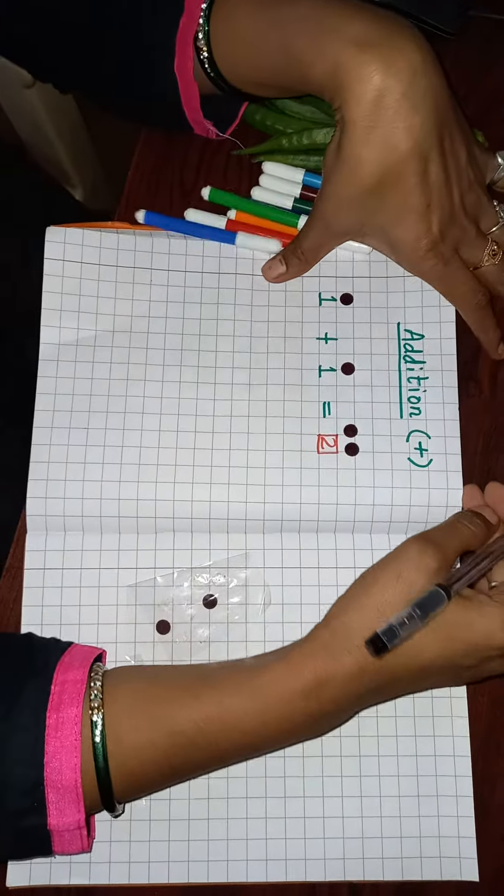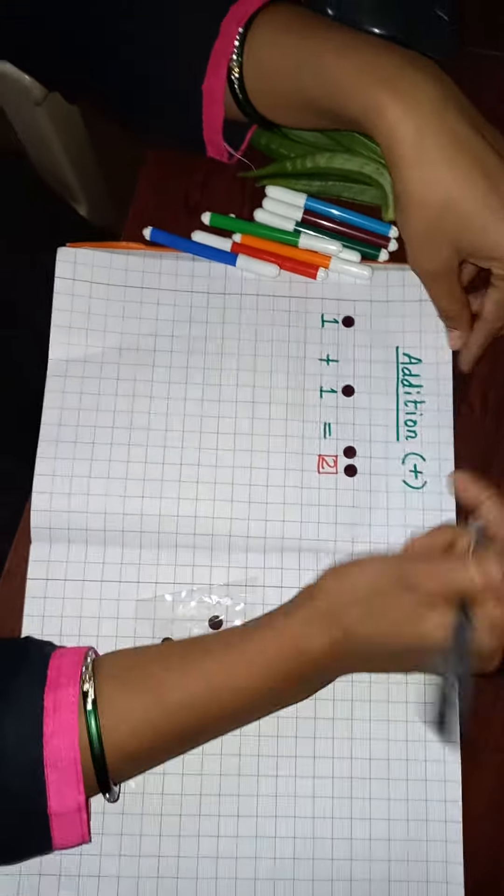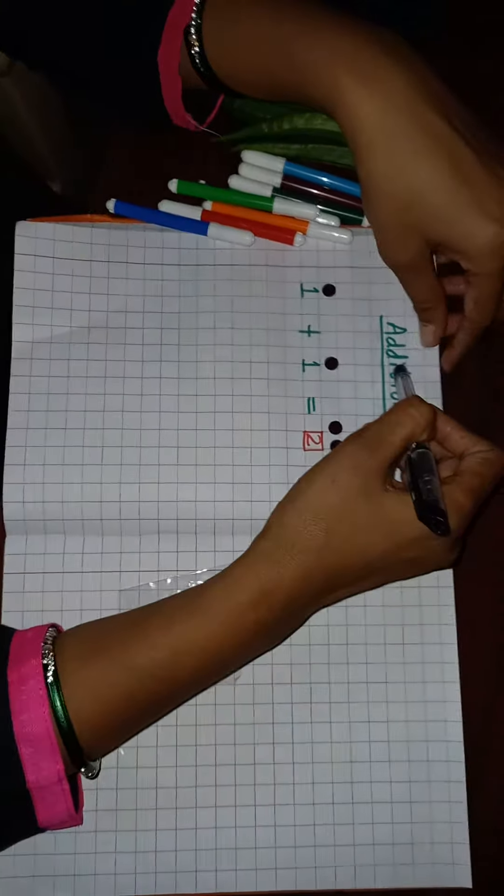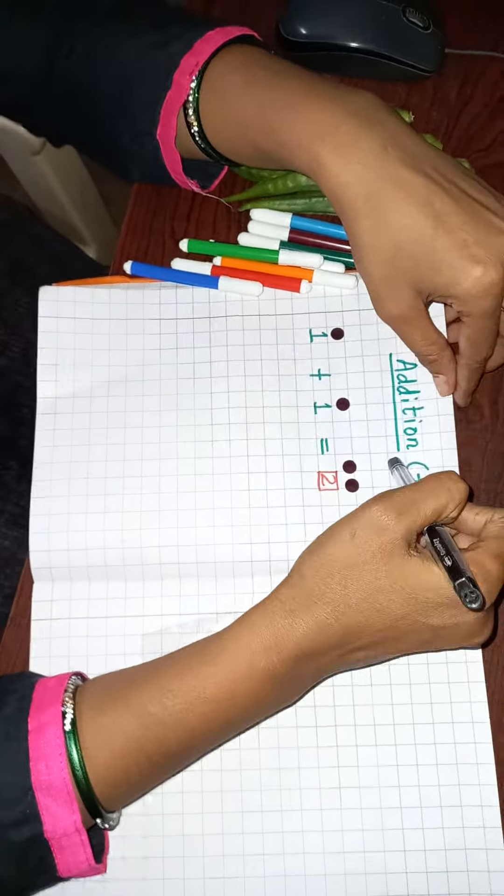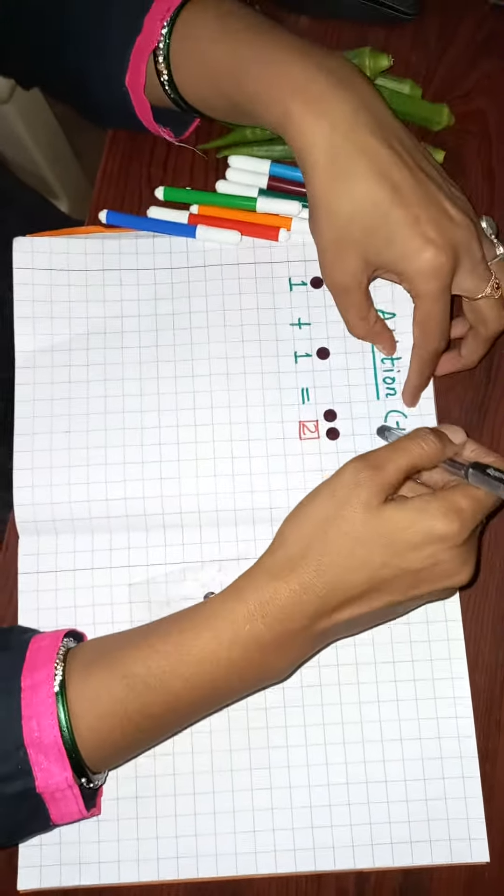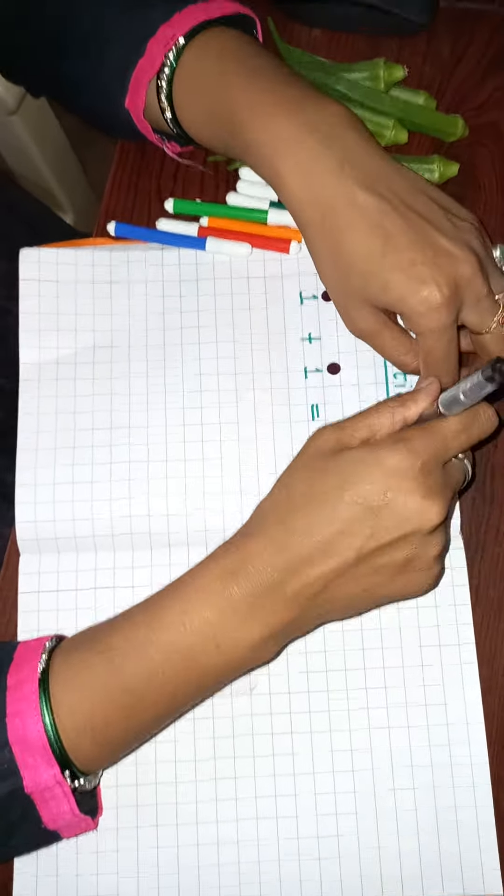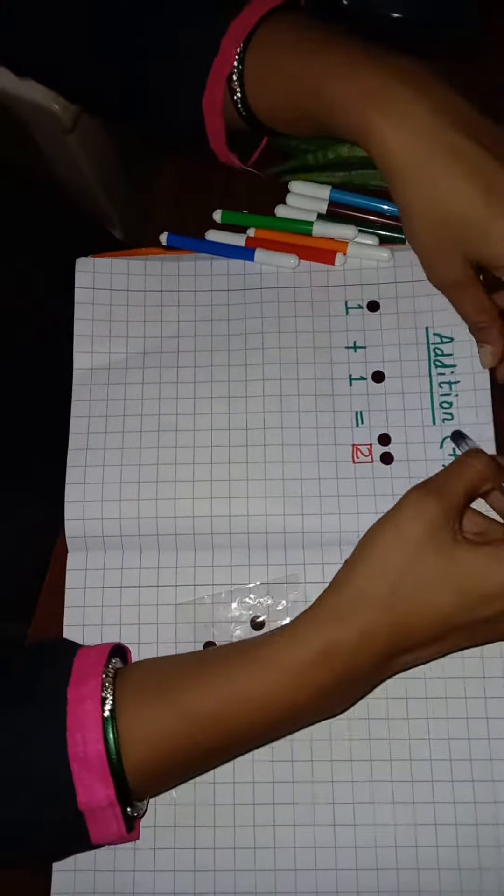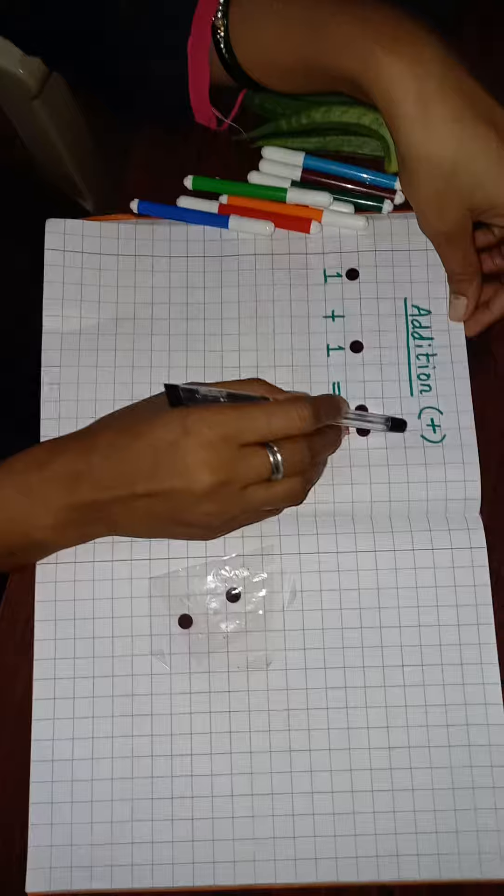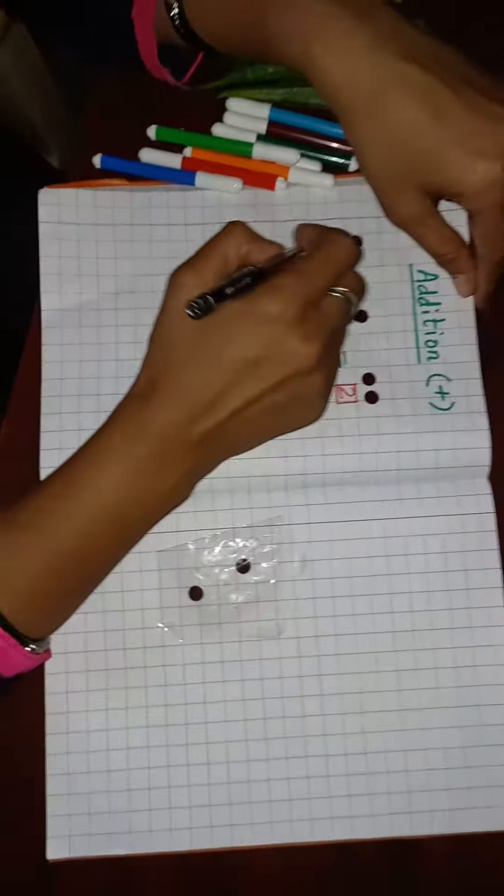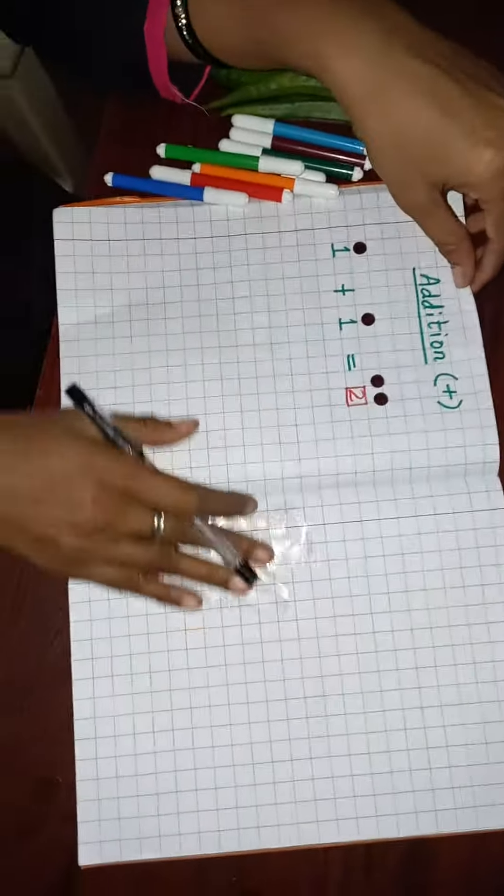Good morning my lovely kids. We will learn addition, A-D-D-I-T-I-O-N. We can use the symbol plus instead of and. This is the symbol of addition. We will learn addition with the help of examples.